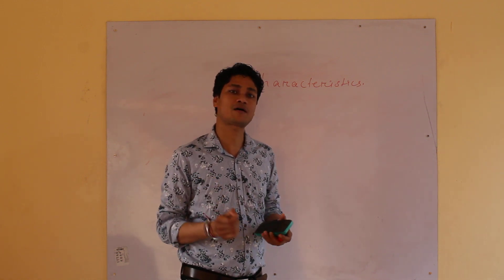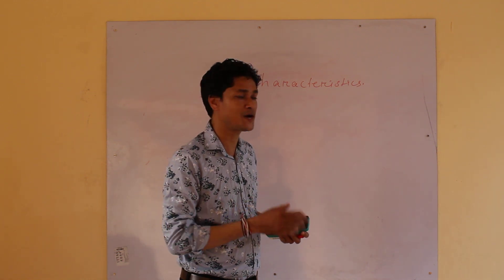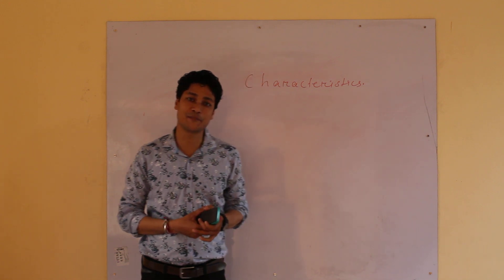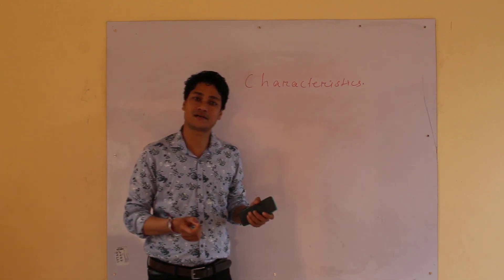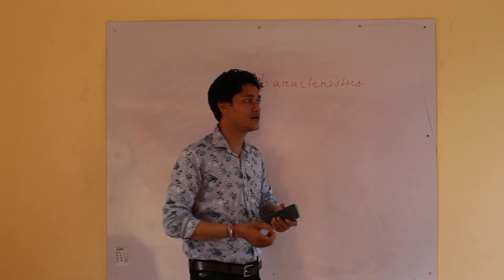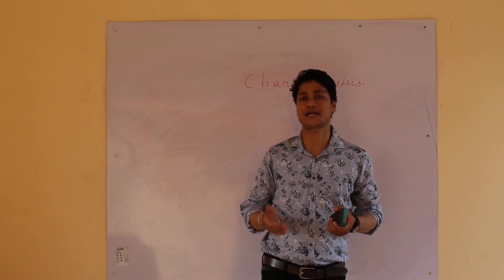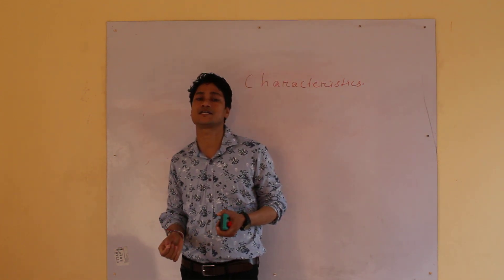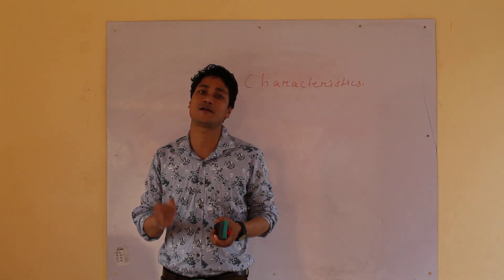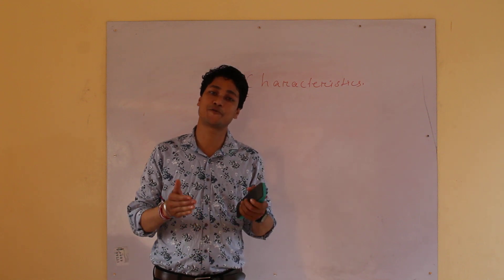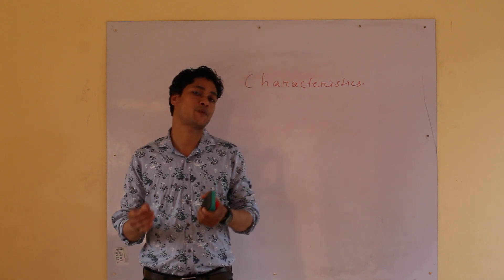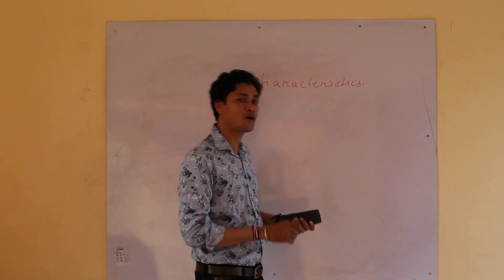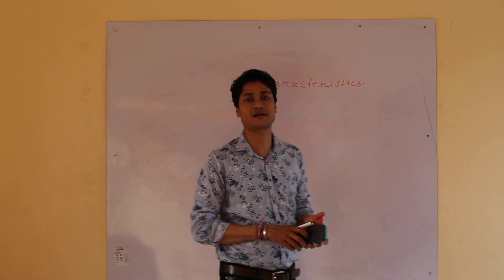Suppose we talk about a human being. The characteristics of a human being will be its height, its color, and its weight. These are the characteristics of a human being, and these characteristics of a particular human being make him different from any other human being. Did you understand the meaning of characteristics, children?